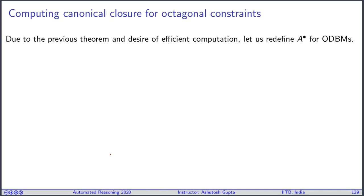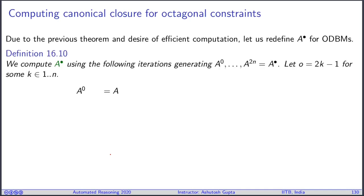Due to the previous theorem and the desire for efficient computation, let us redefine closure for ODBMs. We compute using 2n matrices produced one after another: A0, A1, ..., A2n, where the final A2n is the closure. First, A0 is A. Then we have odd and even rules. In the odd rule, we update entry ij if their value is smaller than (aii_bar and ajj_bar) divided by 2. In even steps, at iteration o, we need to consider paths through i_bar and j_bar.